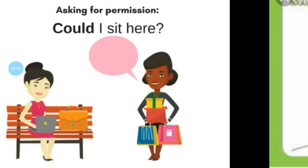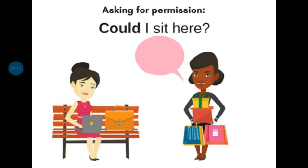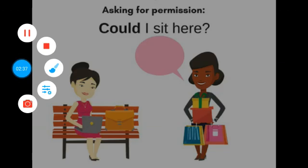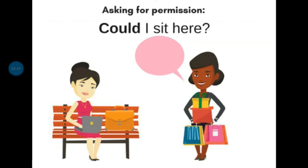The next one is, as you can see, here is a bench. One lady is sitting on the bench, and the other is asking: Could I sit here? Meaning, kya woh yahaan bait sakti hai? This is the permission when one lady asks the other: Can I sit here? Or, could I sit here? Meaning, kya mein yahaan bait sakti hoon? If you want to take permission like this, you have to say: Can I sit here? Or, could I sit here? You can use these sentences.